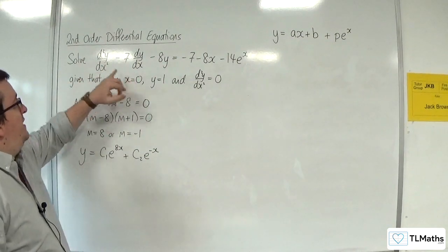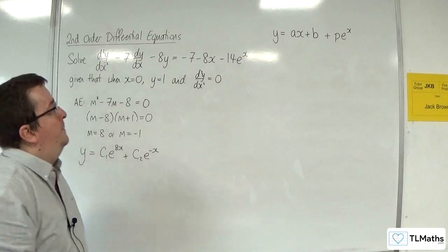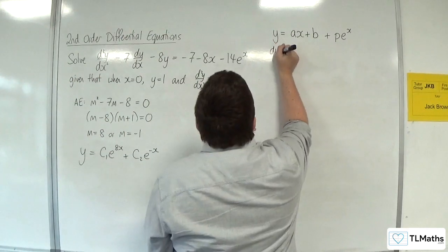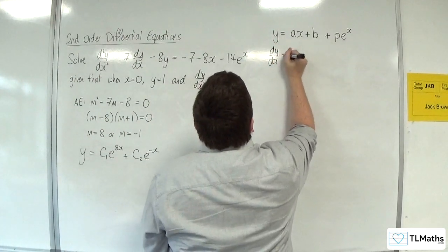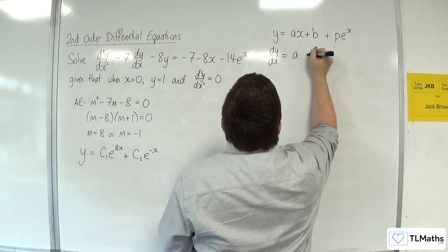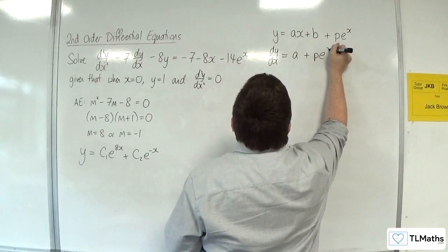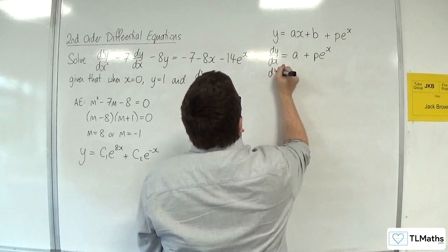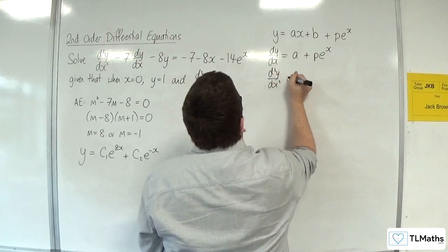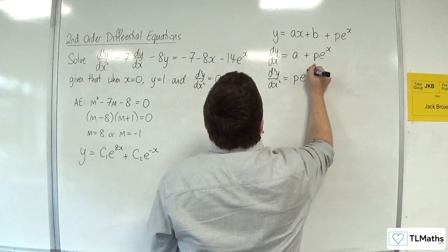Now I need dy/dx and d²y/dx². So dy/dx would be equal to a + pe^x. And d²y/dx² would be equal to pe^x.